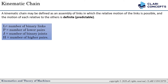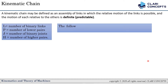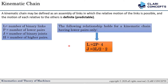Let l be the number of binary links, p the number of lower pairs, j the number of binary joints, and h the number of higher pairs. There are two equations: the first is l = 2p − 4, and the second is j = (3l/2) − 2.